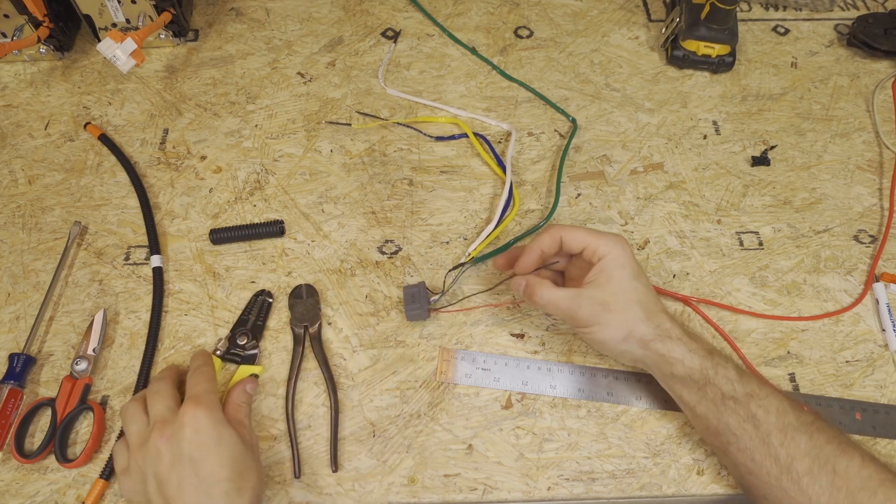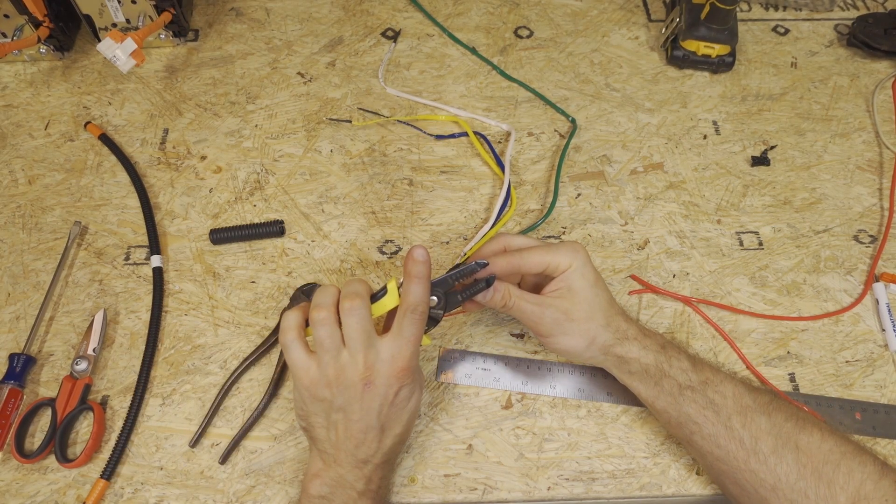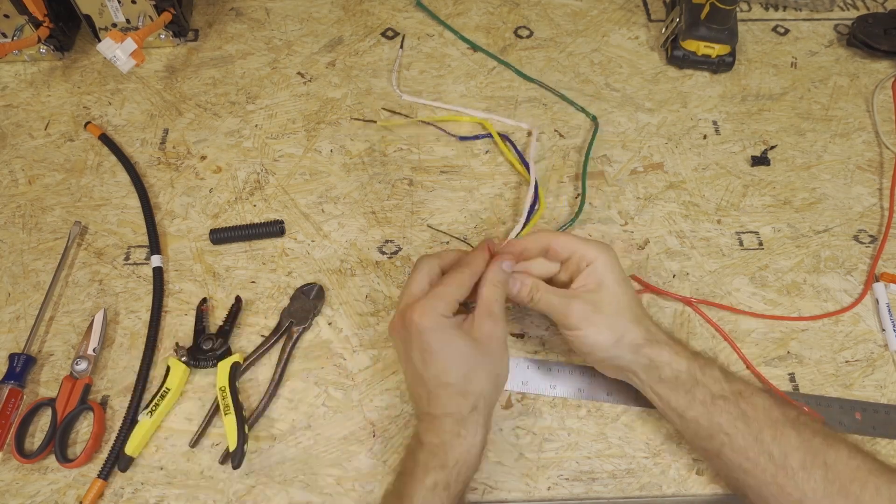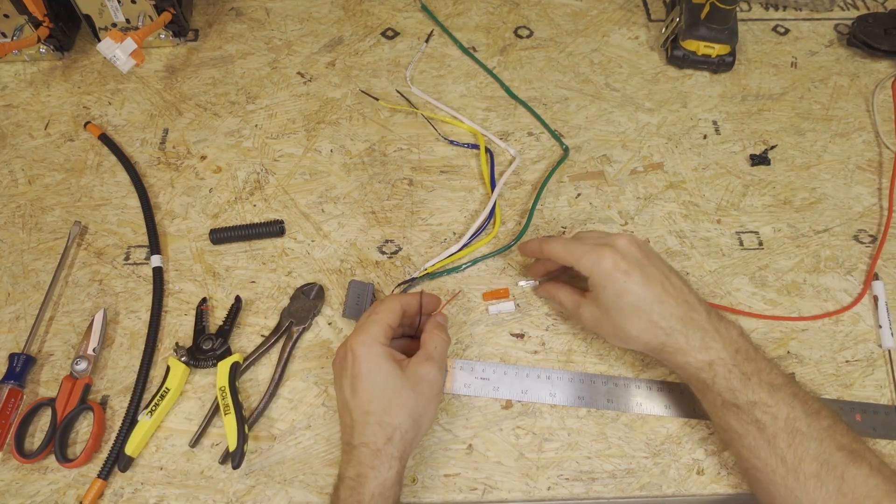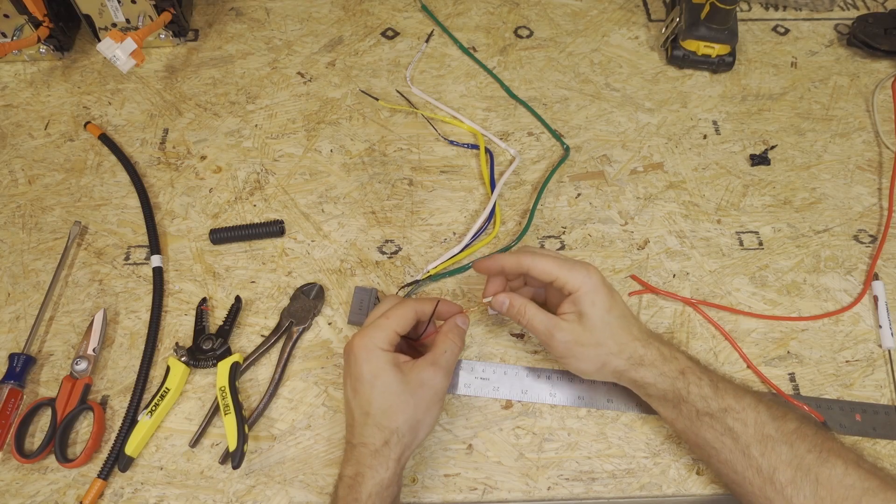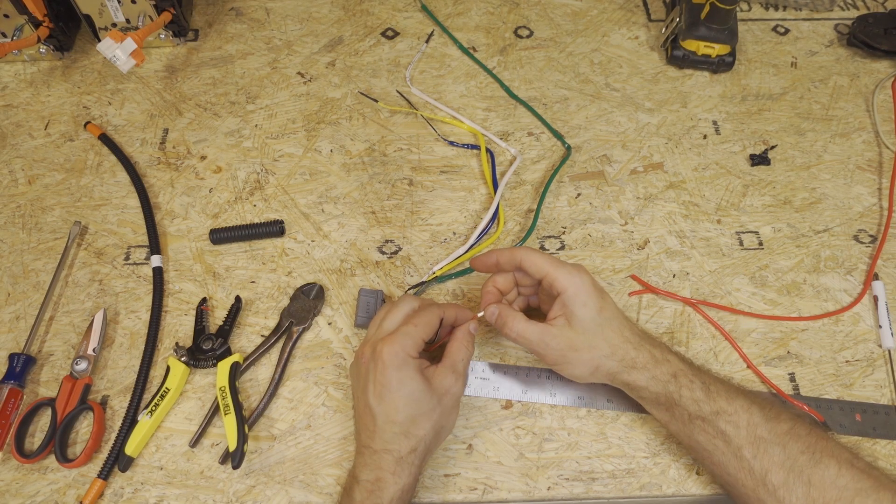And then we're going to take and strip the black and red wires, 8 to 10 millimeters. Then we're going to take the orange and white Anderson connectors and the 15 amp terminals, and we're going to crimp those on.